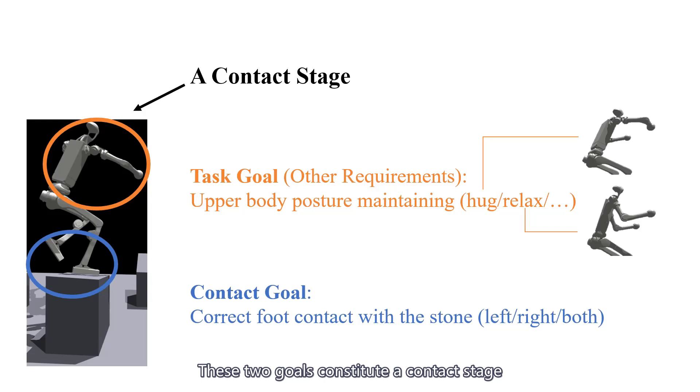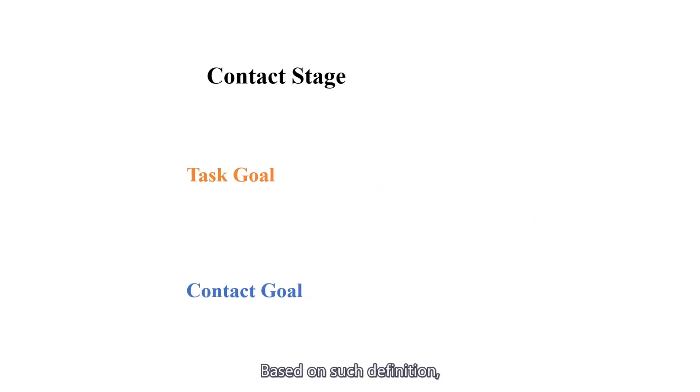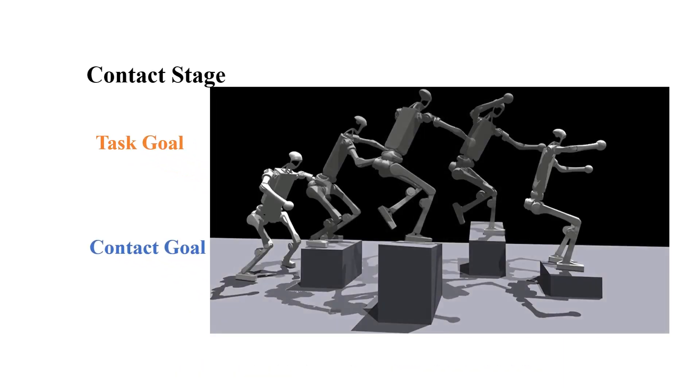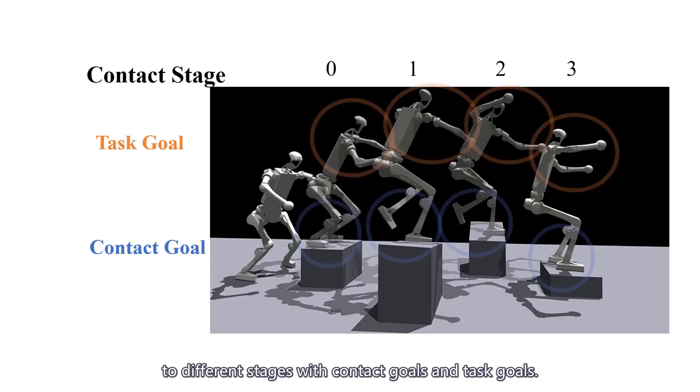These two goals constitute a contact stage associated with this stone. Based on such definition, the whole parkour jumping task can be decomposed to different stages with contact goals and task goals.